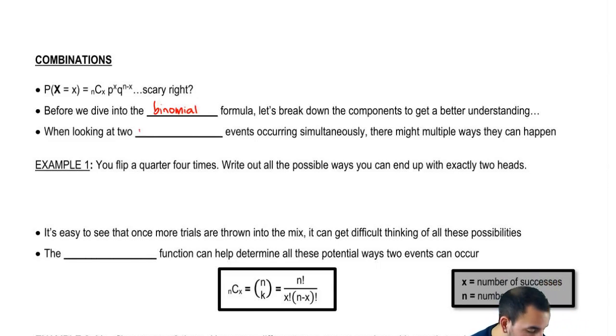When looking at two independent events occurring simultaneously, for example, flipping a quarter - you flip heads, you flip heads again, you flip tails - those are independent events occurring one after another. There might be multiple ways that this can happen. So you flip a quarter four times, write out all the possible ways you can end up with exactly two heads.